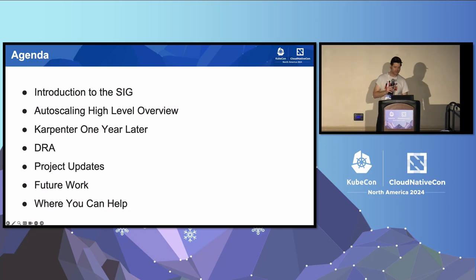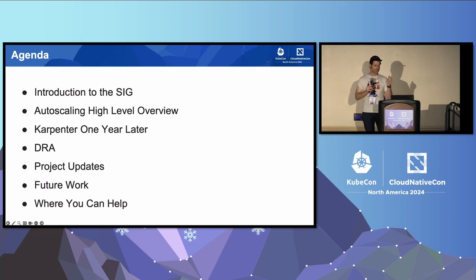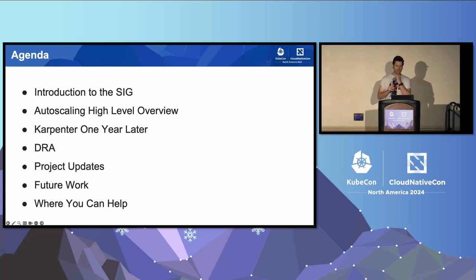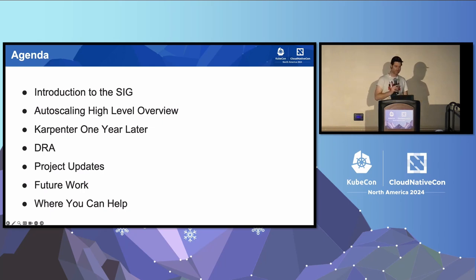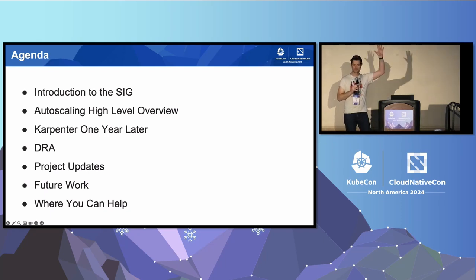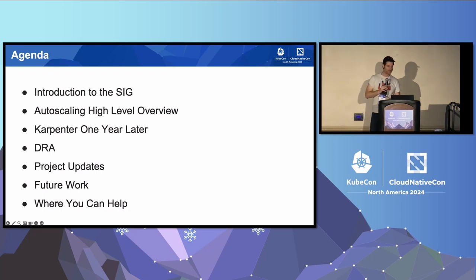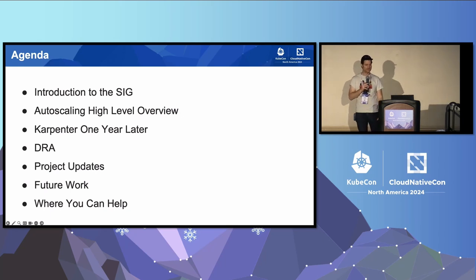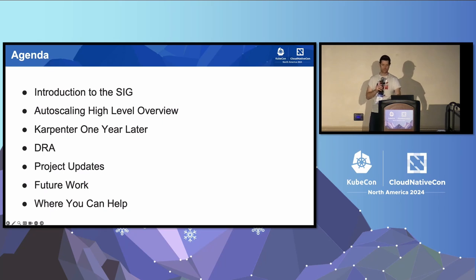Quick overview of what we're going to talk about. I'm going to introduce you to the SIG, talk at a high level and a visual level about autoscaling concepts and how they work. Brief mention of Karpenter one year later — Karpenter joined SIG Autoscaling last year, so it's been great to have them in the community. Some stuff about DRA, project updates across the many projects in SIG Autoscaling, future work, and specific examples of where you can help.